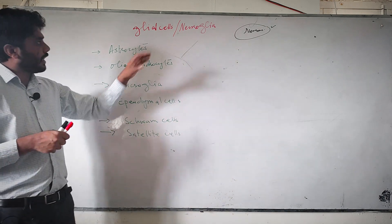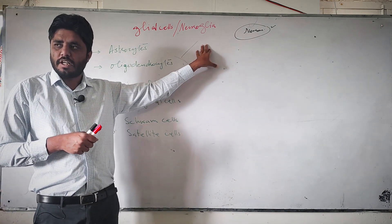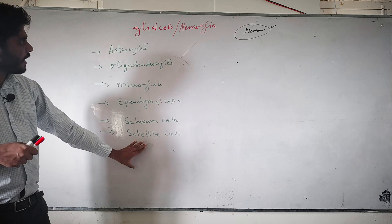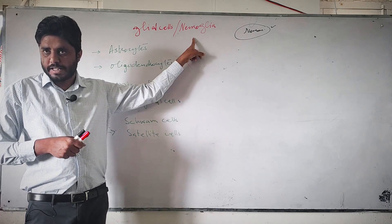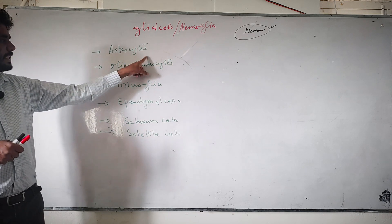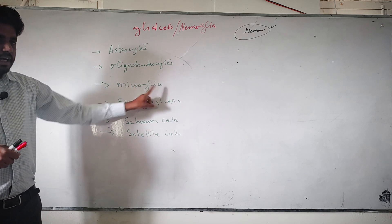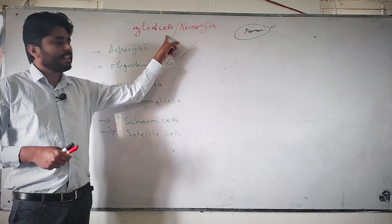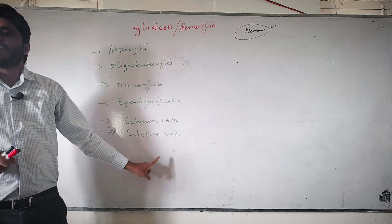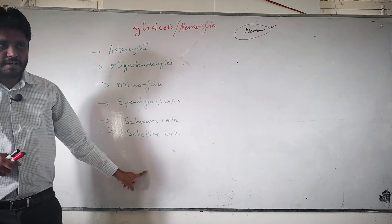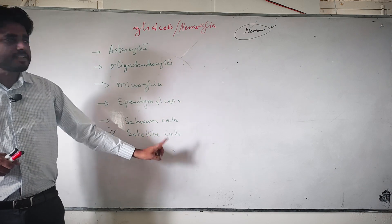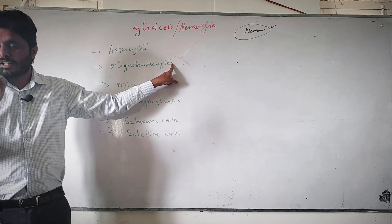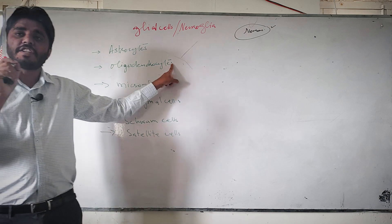When we look deep into the glial cells or neuroglia cells, there are different kinds of cells all known as glial cells or neuroglia. These are astrocytes, oligodendrocytes, microglia, ependymal cells, Schwann cells, and satellite cells. They all have different functions and different structures, but they all classify into one group — glial cells — which are the supportive cells of the nervous system.